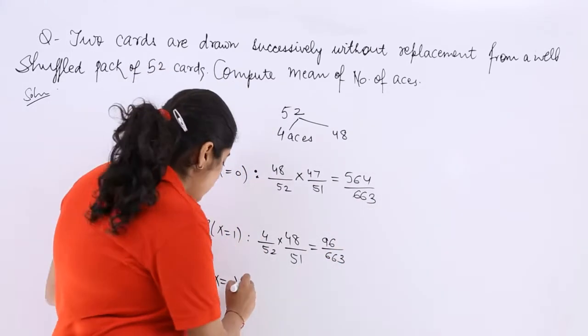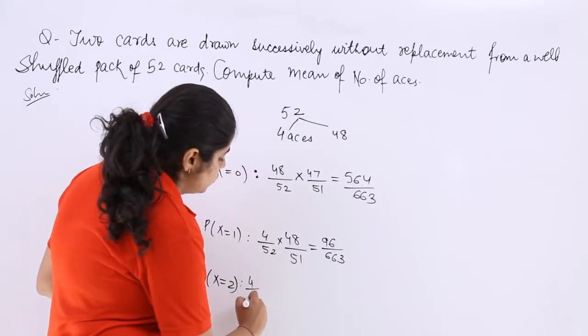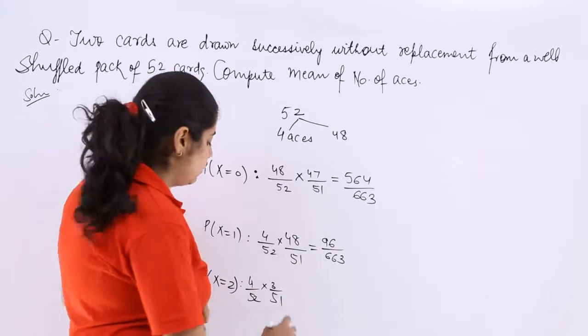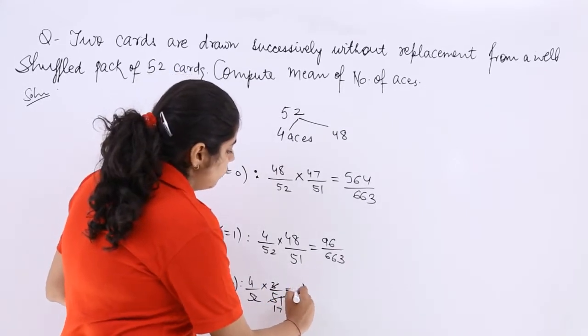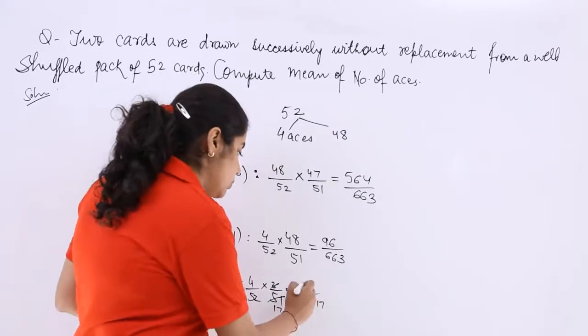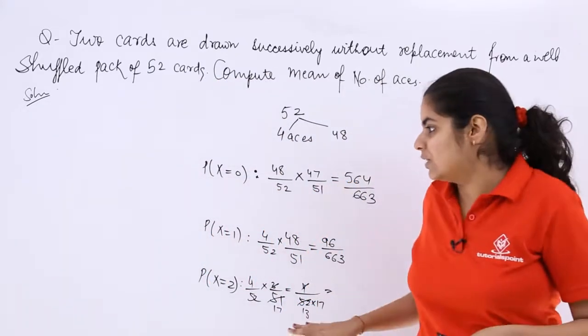Now X equals 2 means you have both from the ace category. So the first is 4 over 52 multiply by 3 over 51. This is 4 over 52 multiply by 3 over 51. You see that this gets cancelled. So it is 1 over 13 multiply by 3 over 17.